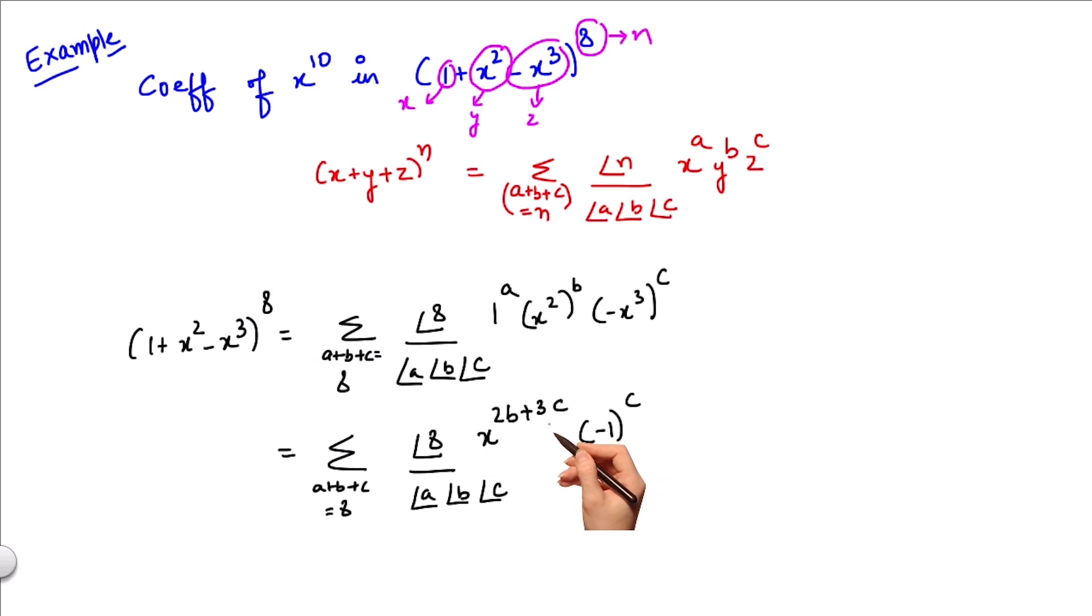Since I am only interested in the coefficient of x^10, I need 2b + 3c = 10.